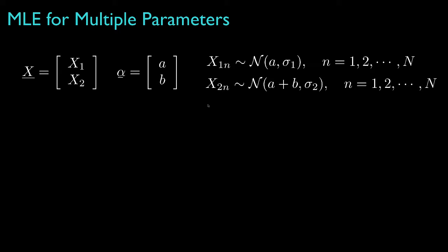As another example, suppose that the vector x contains two independent elements, x1 and x2, where x1 is a Gaussian random variable with a mean equal to a and standard deviation sigma1, and x2 is a Gaussian random variable with a mean equal to a plus b and a standard deviation of sigma2. Furthermore, let's suppose that we get n independent realizations of the vector.